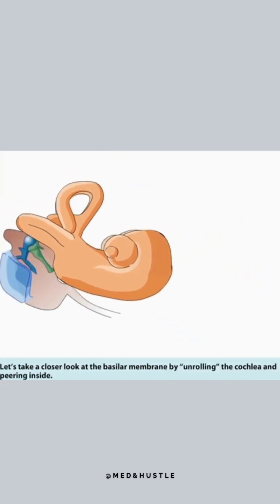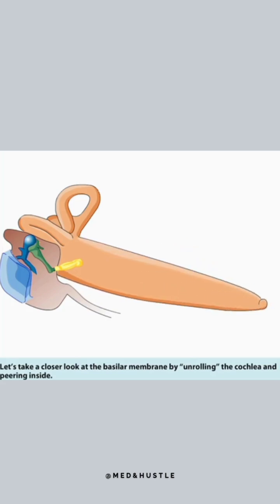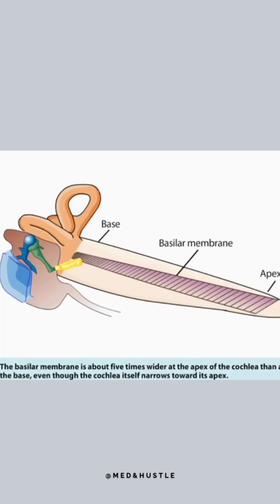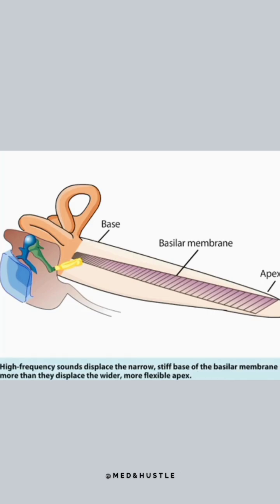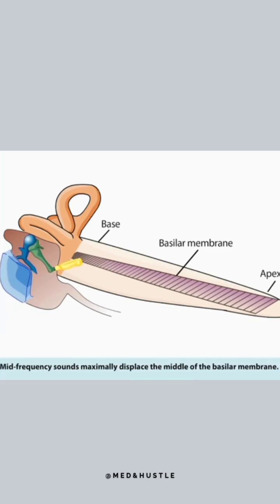Let's take a closer look at the basilar membrane by unrolling the cochlea and peering inside. The basilar membrane is about five times wider at the apex of the cochlea than at the base, even though the cochlea itself narrows toward its apex. It vibrates in response to sound transmitted to the fluid-filled cochlea by deflections of the oval window initiated by the bones of the middle ear. High-frequency sounds displace the narrow, stiff base of the basilar membrane more than they displace the wider, more flexible apex. Mid-frequency sounds maximally displace the middle of the basilar membrane. Finally, lower-frequency sounds maximally displace the apex.